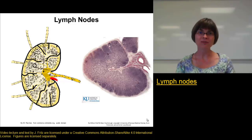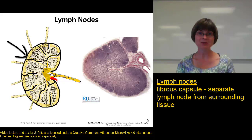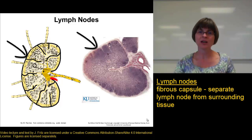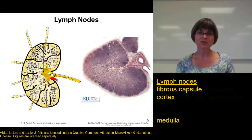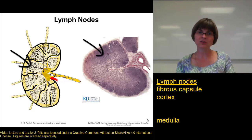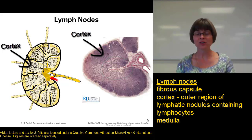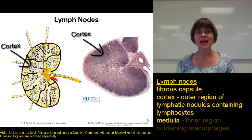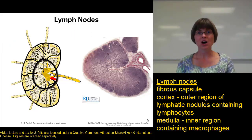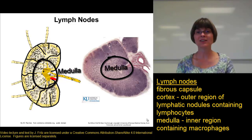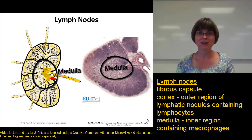A lymph node is surrounded by a fibrous capsule that separates it from the surrounding tissue, and parts of this fibrous capsule extend into the lymph node to divide it into sections. There's an outer cortex region and an inner medulla. The outer cortex contains a lot of lymphocytes — B and T lymphocytes — for specific immunity. The inner medulla contains a lot of macrophages for the cleanup function, removing dead cells, debris, and foreign material from the lymph.